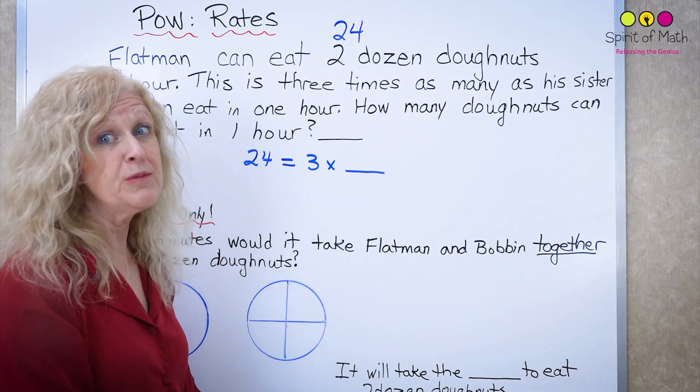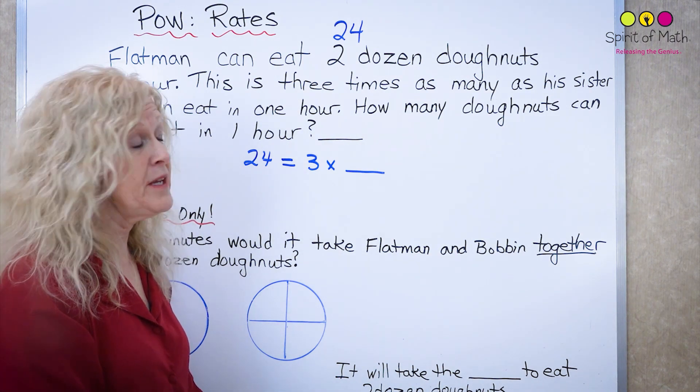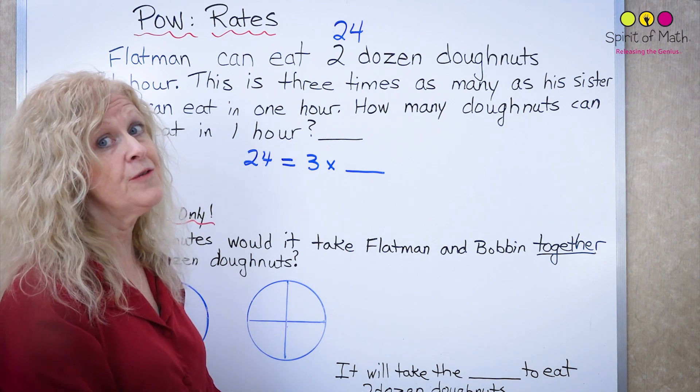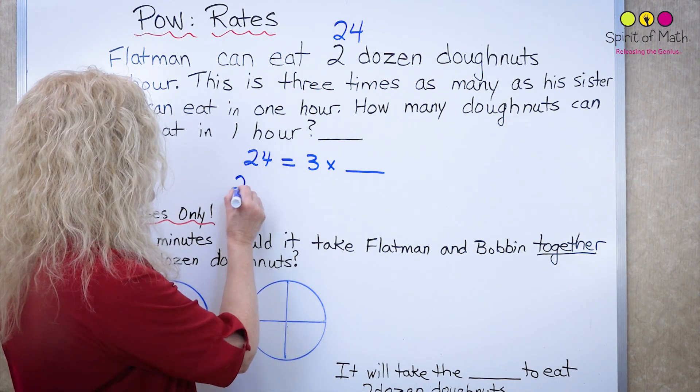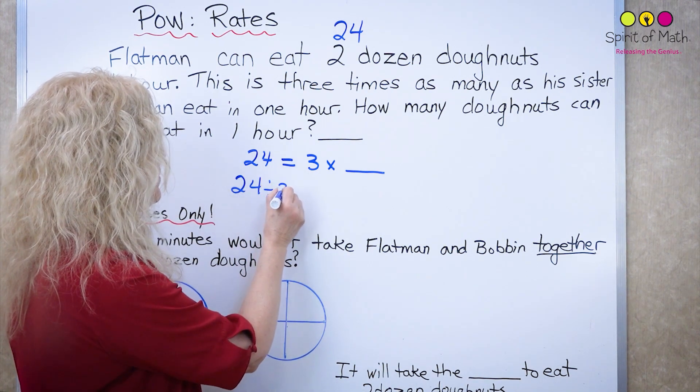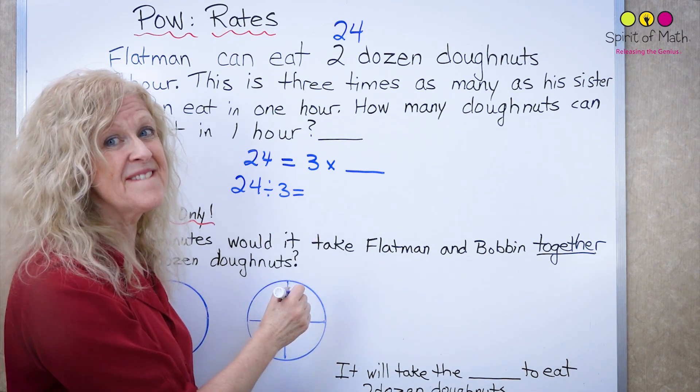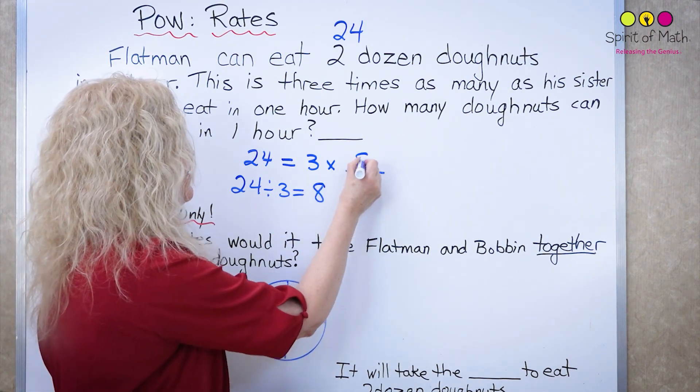Okay three times what equals 24. Another way you can think about it is 24 divided by three and what does that give you? Did you get eight? Good for you.